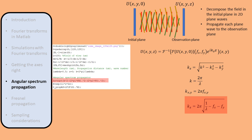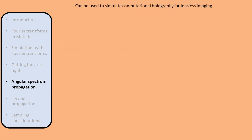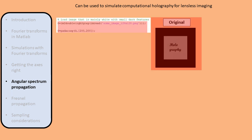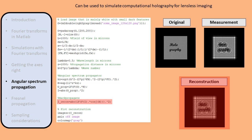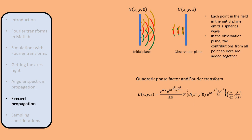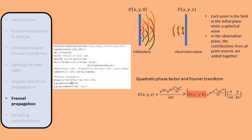Angular spectrum propagation can be used to simulate inline holography for lensless imaging. In inline holography, we have an object that is mainly transmissive with small features that block the light. The light propagates freely and then we measure the intensity. To reconstruct the small features of the object, we back-propagate the recorded intensity. For Fresnel propagation, we multiply the initial field with the quadratic phase factor and take the Fourier transform. Assuming we are only interested in intensity, we can ignore the phase factor in front. The axes of the propagated field are given by the spatial frequency axis multiplied by the wavelength and the propagation distance.